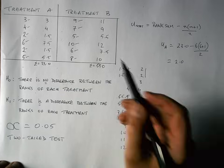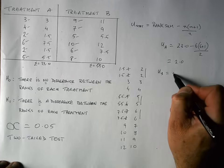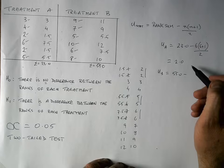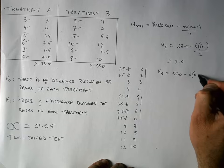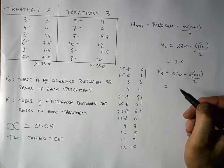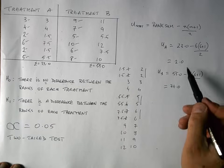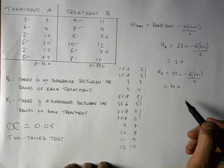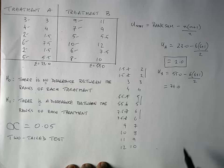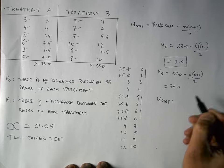Next, I work out the U statistic for treatment B: U equals 55.0 minus (6 times 7) divided by 2, which gives a result of 34.0. So I've got two U statistics, but I can only use one. In the Mann-Whitney test, you use the lowest value. So I'm going to use the U statistic for treatment A — my U statistic is equal to 2.0.